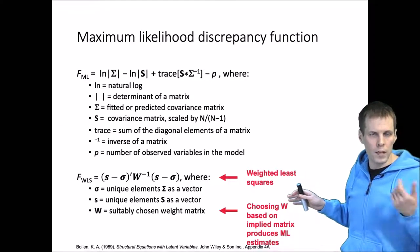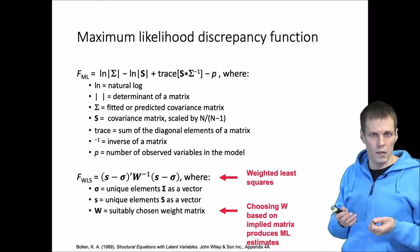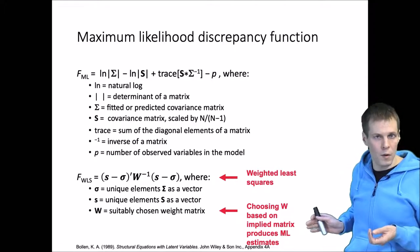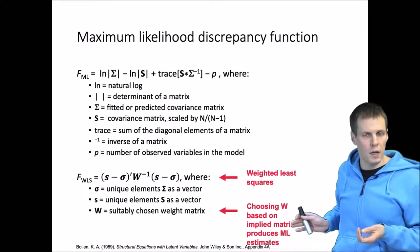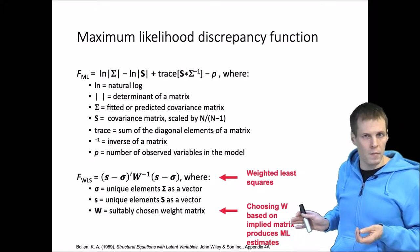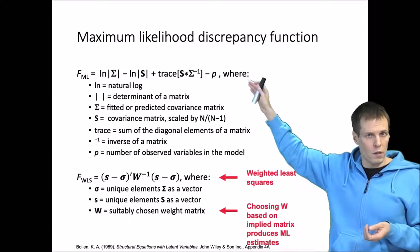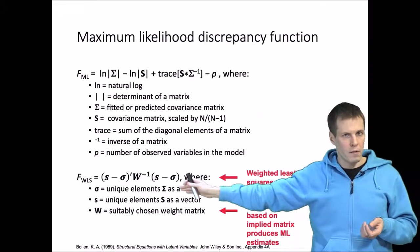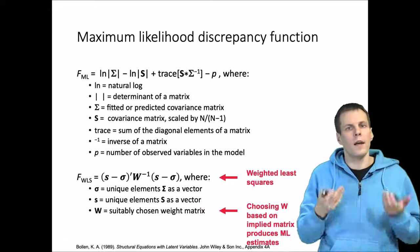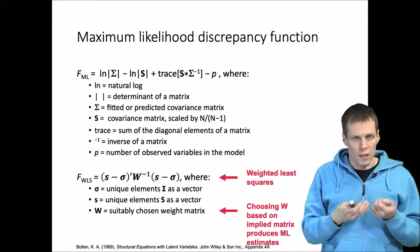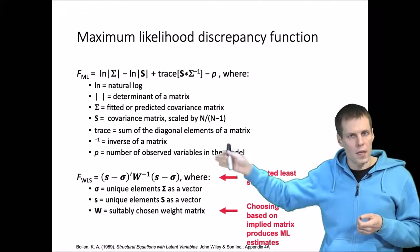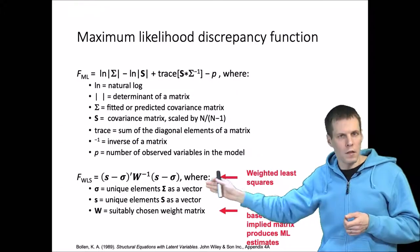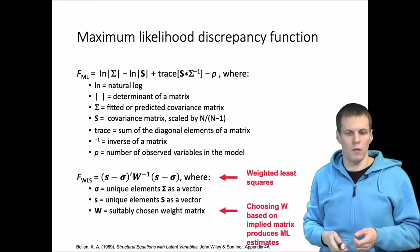For example, the EQS structural regression modeling software uses this estimation approach and it produces identical estimates compared to that equation. So if we just take the weight matrix W and construct it based on the model-implied matrix sigma, this will produce the maximum likelihood estimates.